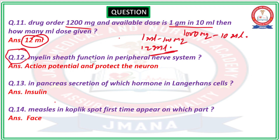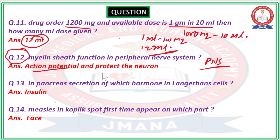Question number 12: Myelin sheath function in the peripheral nervous system (PNS). This question is about the PNS, not the CNS. The myelin sheath functions by enabling action potential transmission and also protects the neuron.